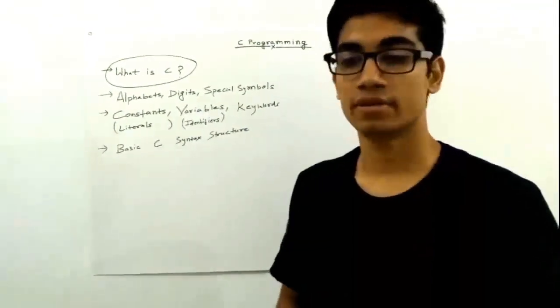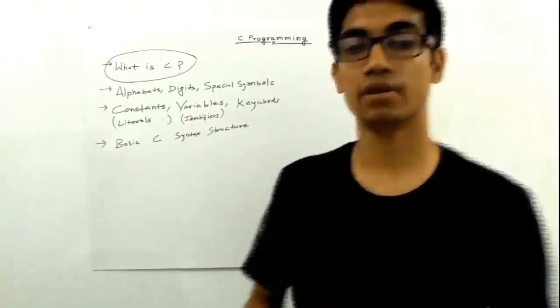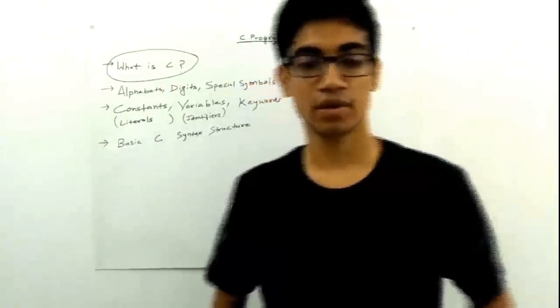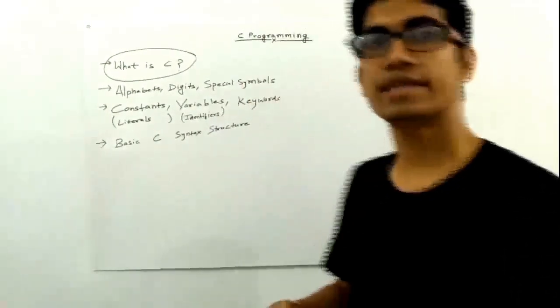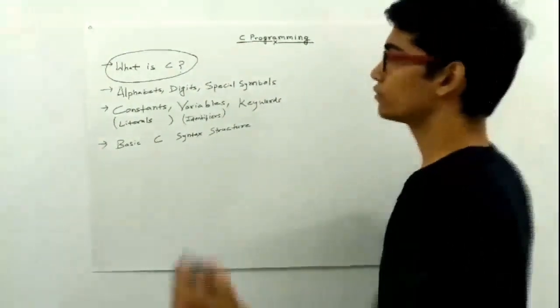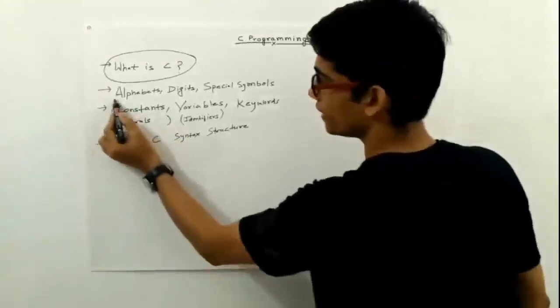Before learning English or any other language, we learn alphabets, words, and then compose sentences. This is the same way we learn C. C also has alphabets, digits, and special symbols.